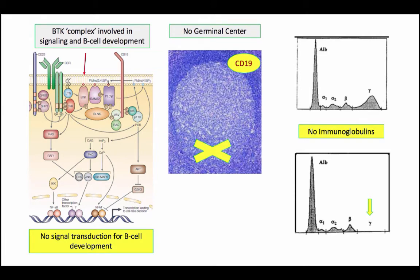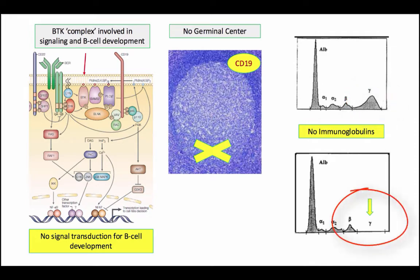Here is a visual representation of the discussion points. The BTK protein is seen as part of the immunoglobulin signaling complex involved in B cell development and maturation, with loss of downstream signaling, no germinal center with B cells, and no CD19 cells. Here is a serum protein electrophoresis showing a polyclonal gammopathy for compare and contrast with the lower SPEP showing complete lack of a spike in the globulin region.